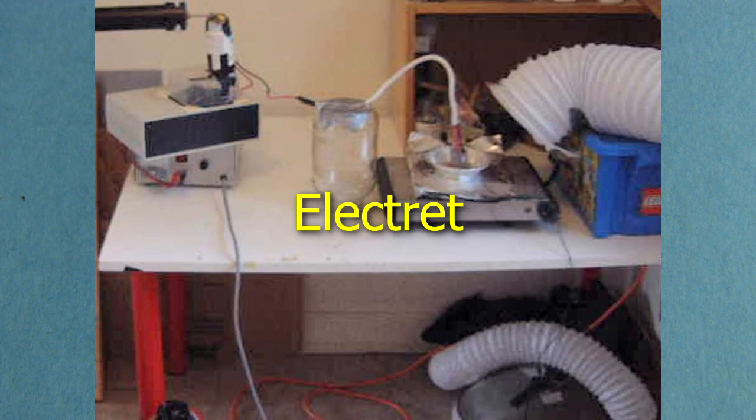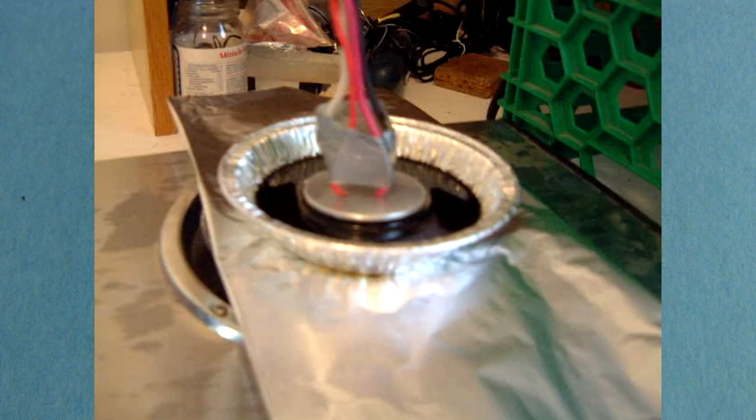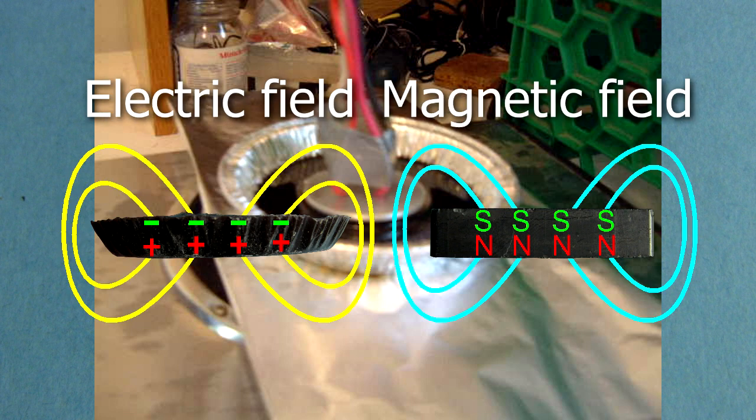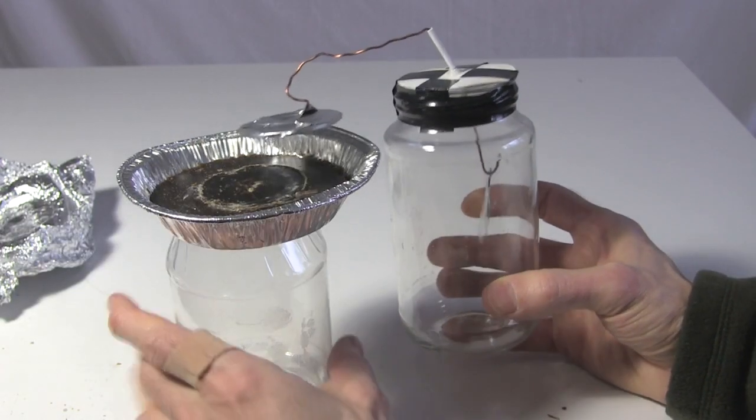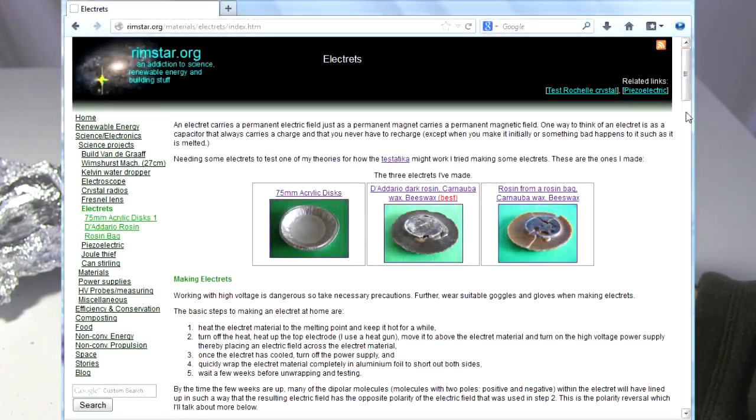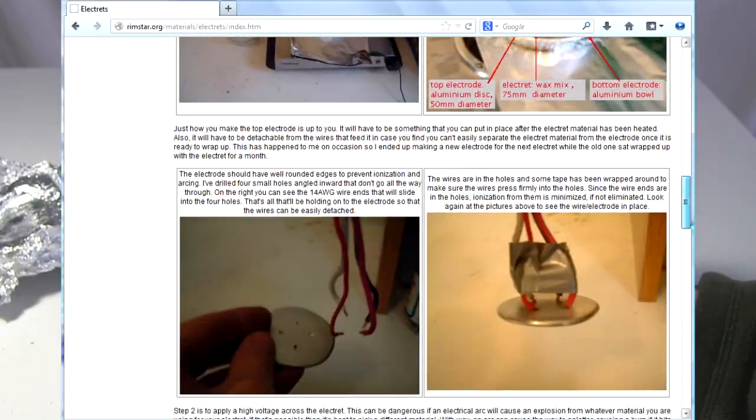Some things are just too unimpressive to show, though the things themselves are an accomplishment and interesting, like this homemade electrite. For those who don't know, an electrite is like a magnet, but instead of the material's atomic arrangement creating a permanent magnetic field, it creates a permanent electric field. Think of a permanently charged capacitor. But all it could do is make the leaves of this electroscope move. They're hard to make but not much to look at. I do have a full write-up on my website though, rimstar.org. The link to the webpage is in the description below this video.